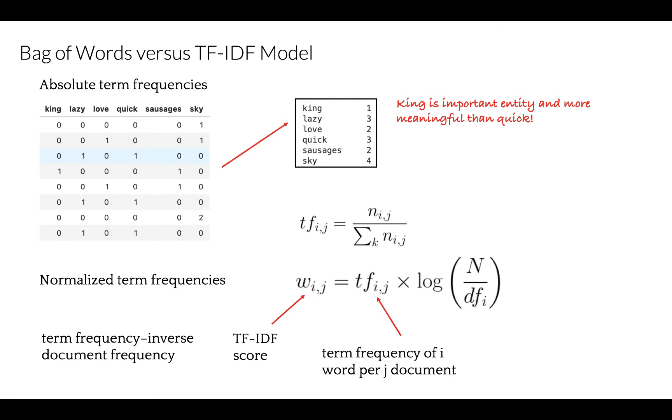TF-IDF is a simple twist on the bag of words approach. TF-IDF stands for Term Frequency Inverse Document Frequency. Instead of looking at the raw counts of each word in each document, TF-IDF looks at the normalized count where each word count is divided by the number of documents this word appears.